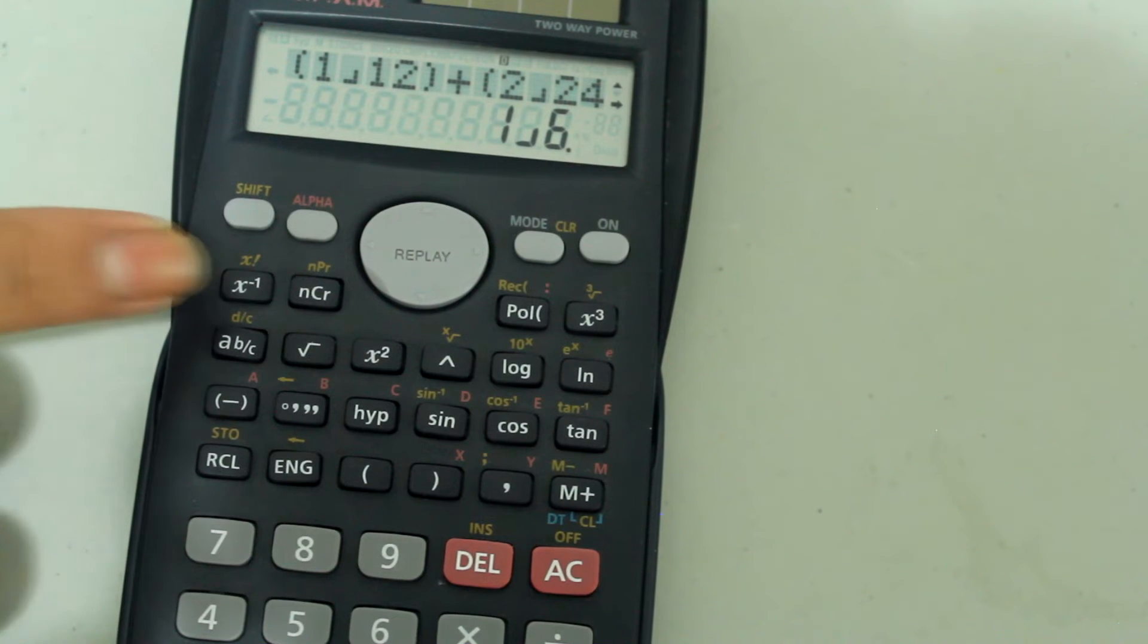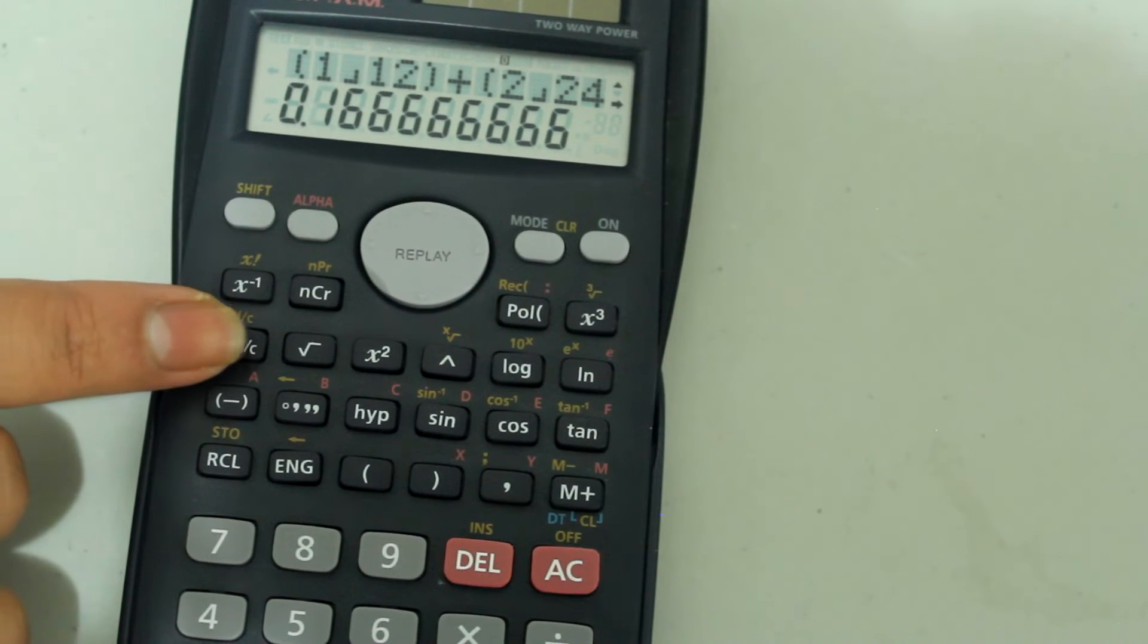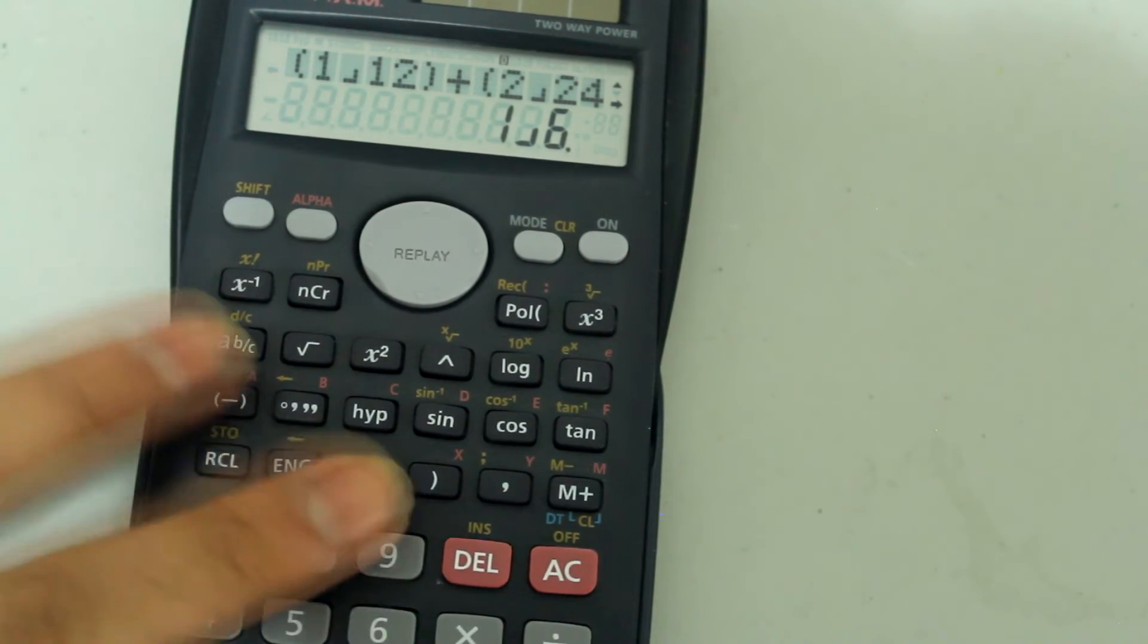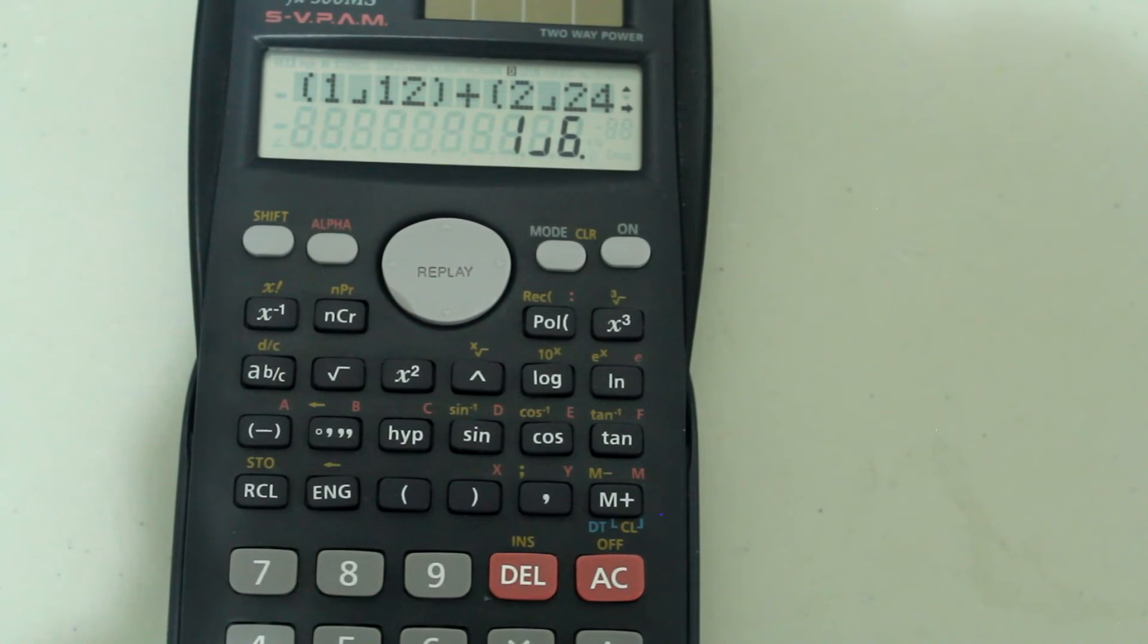If I wanted the decimal, simply just press the fraction button, and I get the decimal. Go back to the fraction using the same button.